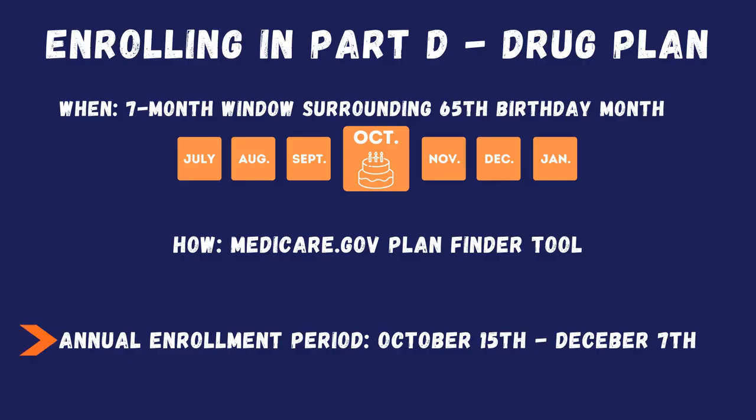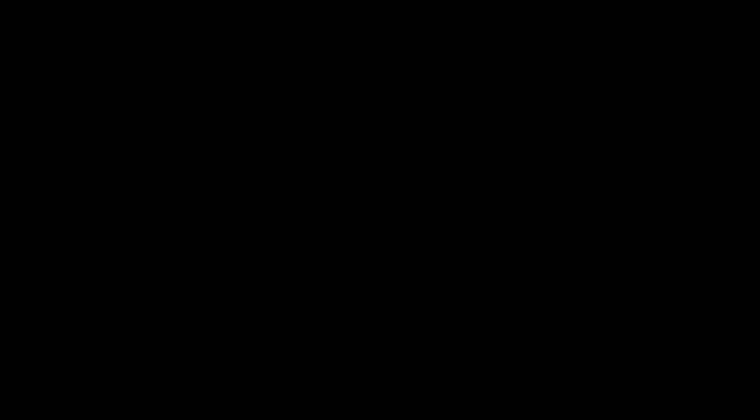Part D drug plans have an annual enrollment period: October 15th through December 7th. During that time, you get a chance each year to retype your drugs into the plan finder tool and shop plans again. Even if your drugs don't change, the plans change each year — so it's very important to review. I always reach out to all my clients during this window.